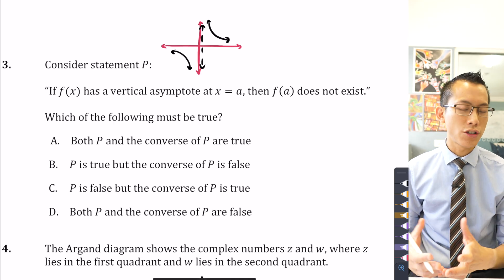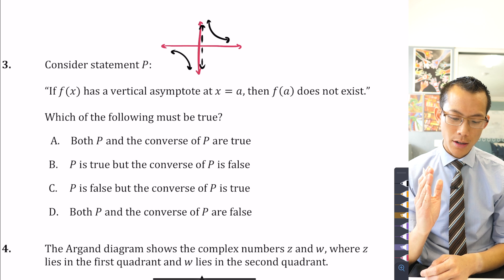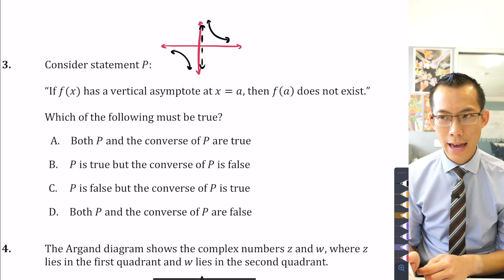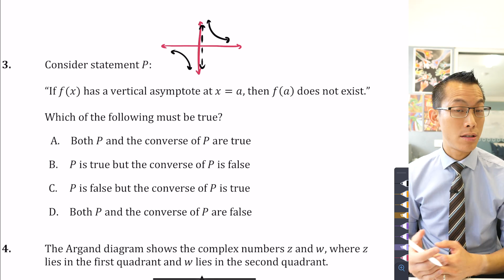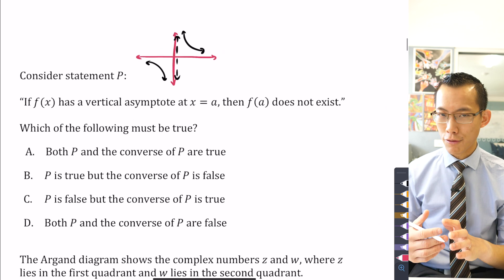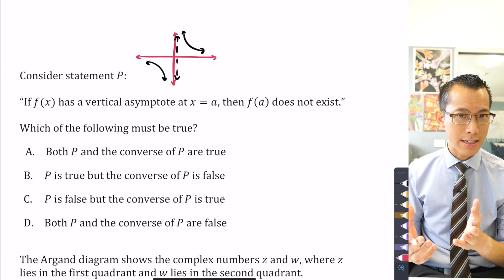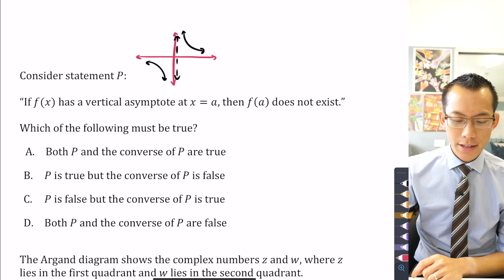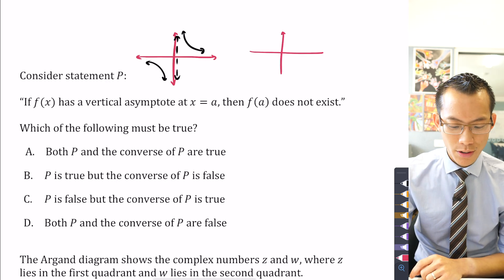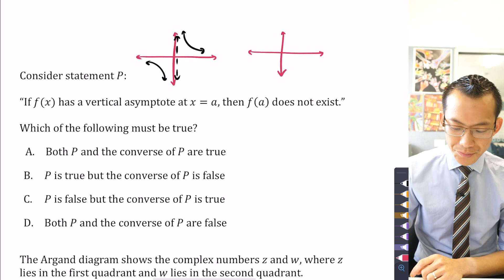Can I think of some kind of function that has a vertical asymptote, but f(a) still gives a value? And you can think of graphs, curves on a Cartesian plane that would do this. But the only problem is you break one of the conditions of the question, and I wonder if you can work out which one it is.